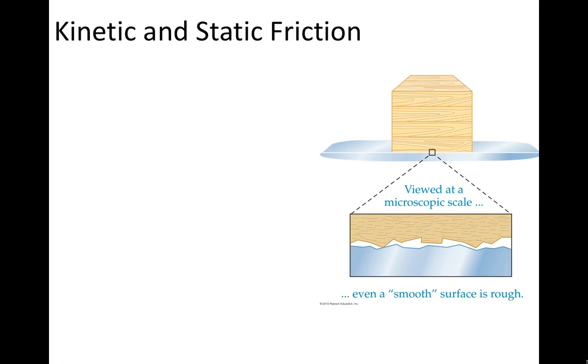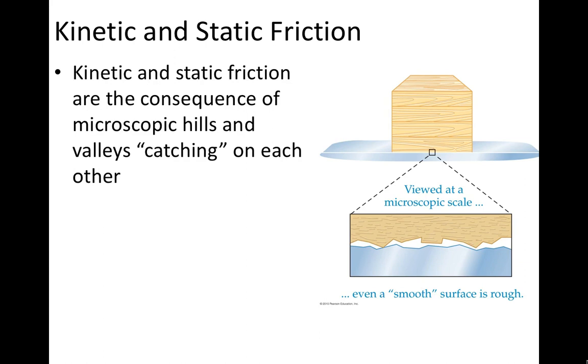So kinetic and static friction are both caused by the same thing. No matter how smooth you get a surface, all surfaces have these microscopic little hills and valleys. And when they try to move past each other or when they succeed in moving past each other, the hills and valleys sort of catch on each other. And that is the source of friction.